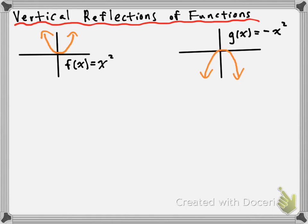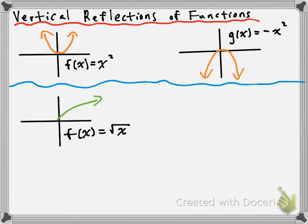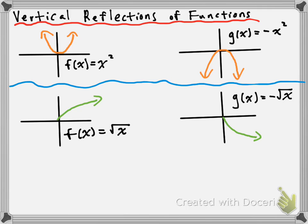This will also work for other kinds of parent functions. For example, if we take a look at the square root function again — our parent square root function, f of x is equal to the square root of x — we can reflect that vertically as well. It'll give us something that looks like that; it's just been flipped upside down. All you need to do is multiply the entire thing by negative 1, which gives you g of x is equal to negative the square root of x. So again, all the y values that were positive become negative and vice versa.